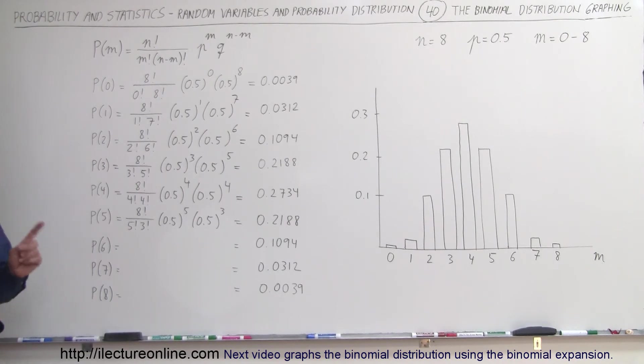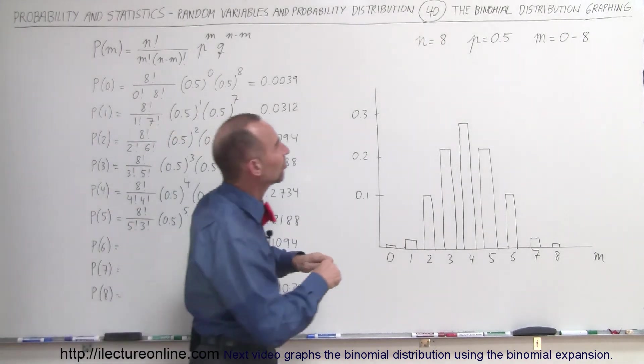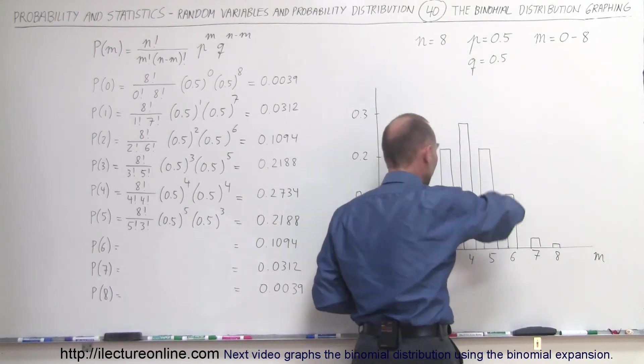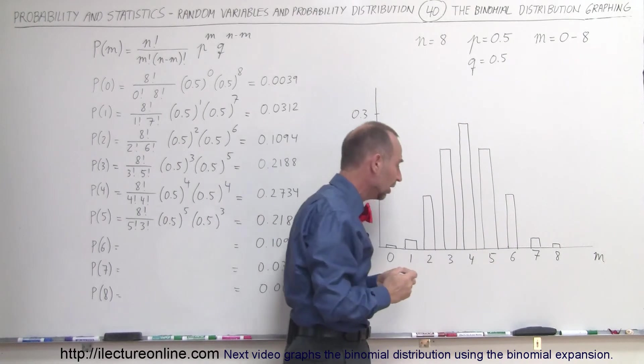Now, here you can see that because p and q are the same, q is therefore also 0.5. If these two are the same, you're going to have a nice symmetric distribution.